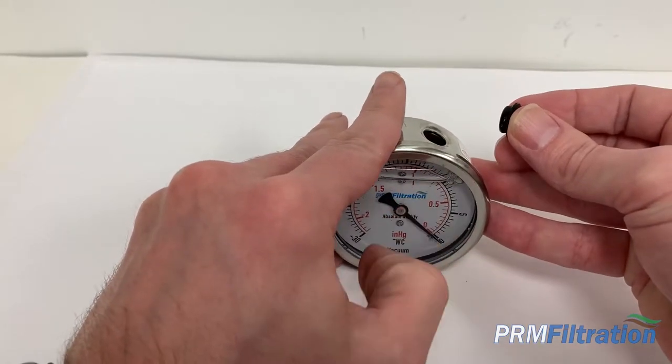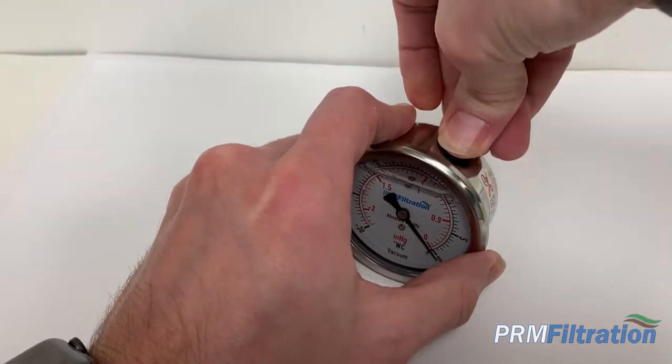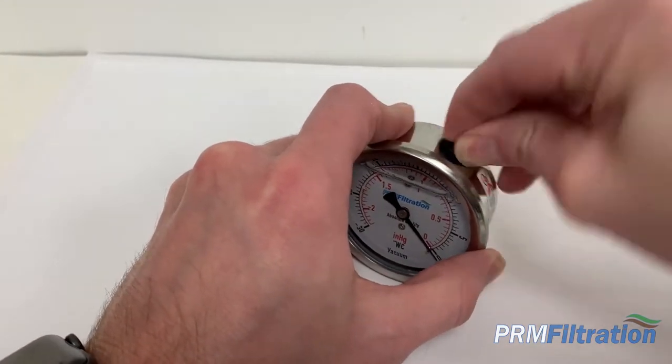and as you can see, the gauge is now dropped back to zero, so it's zeroed out, and then just carefully re-apply the cap.